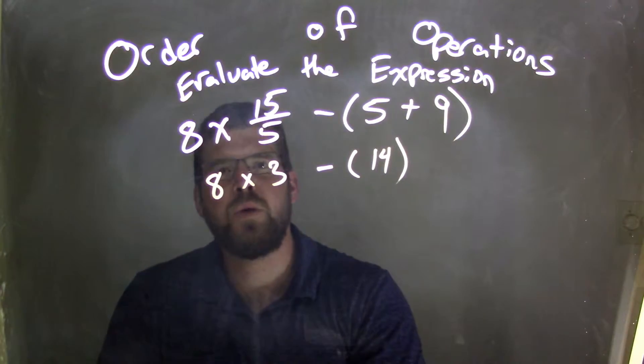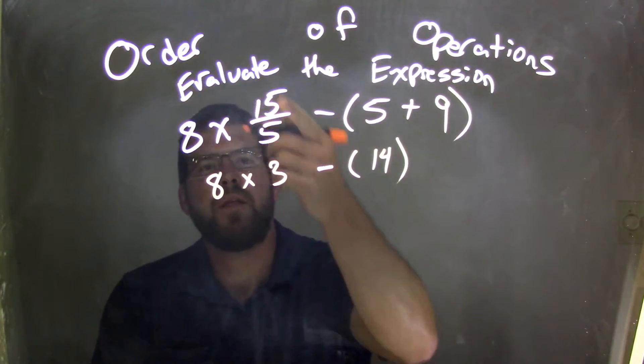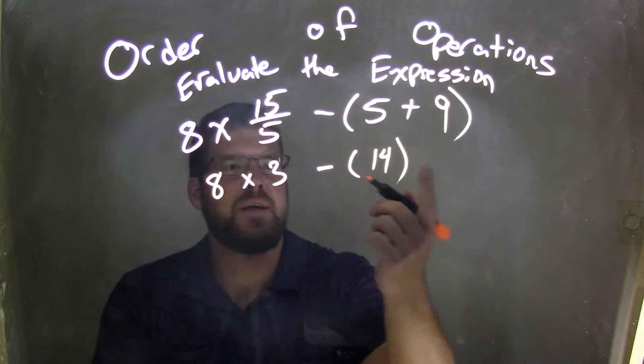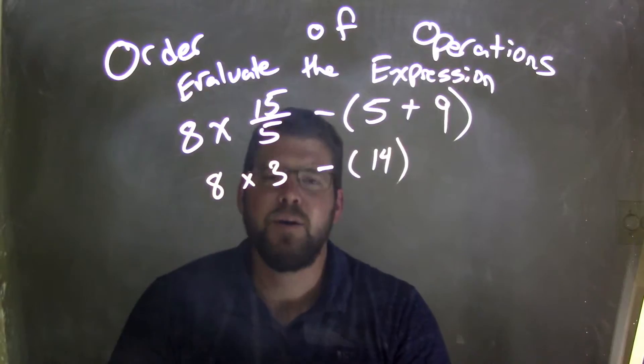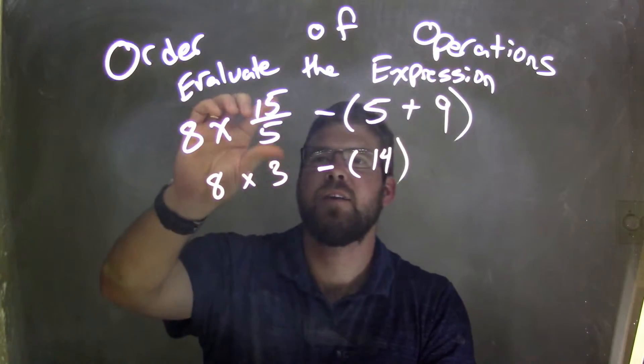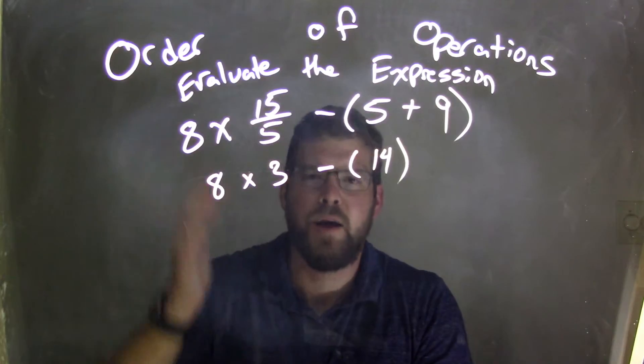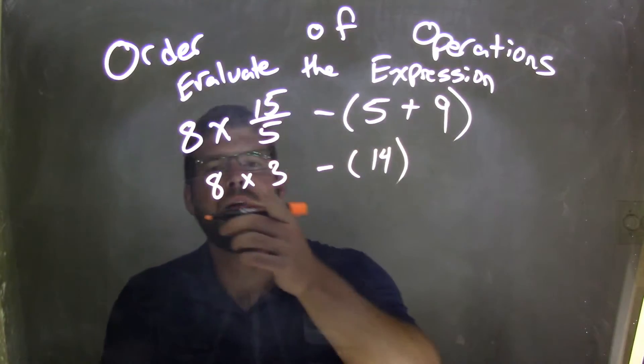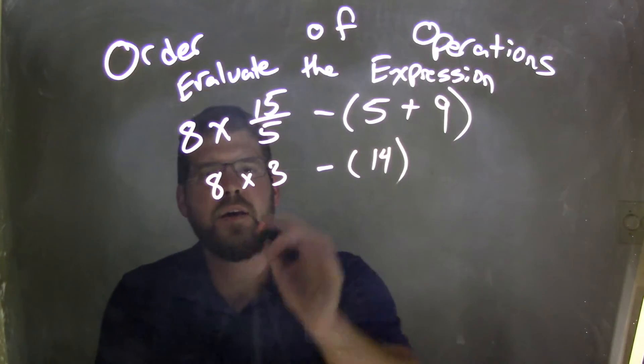And the reason why I'm doing that is I know that this fraction is separating - I can't bring that over, this is going to come before it. And with multiplication and division here, I can divide 15 divided by 5 first, get that 3, and then multiply in my next step. Multiplication comes before subtraction. So 8 times 3 is 24.